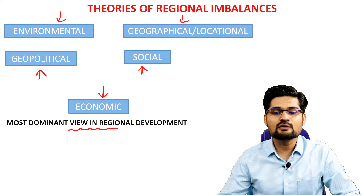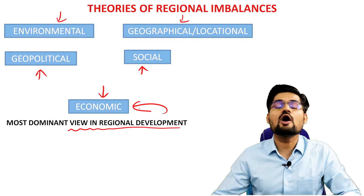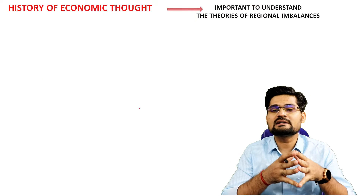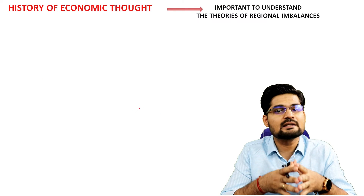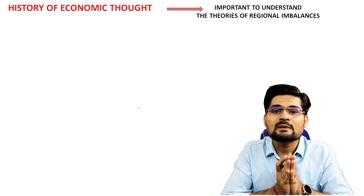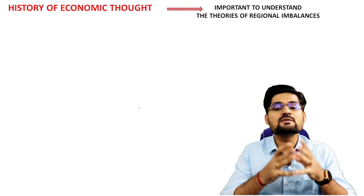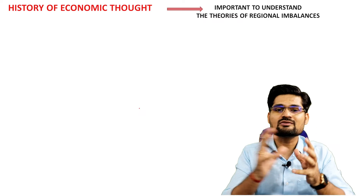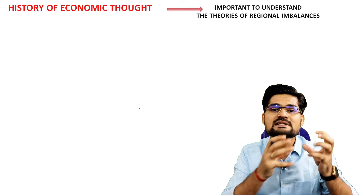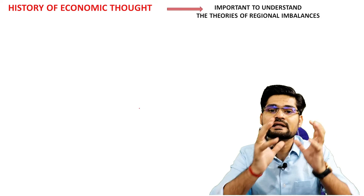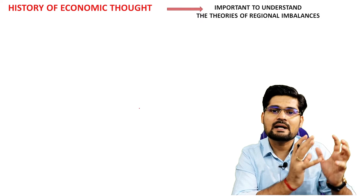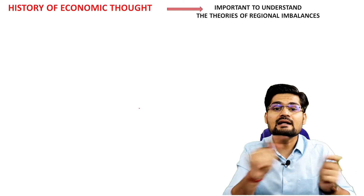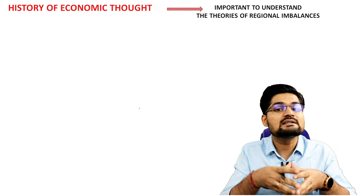The most dominant view in regional development is always the economic view. To understand these theories, we also need to consider the history of economic thought, which is very important for understanding theories of regional imbalances — how through history the economic thought process changed, various scholars gave different kinds of thought, and there was a paradigm shift in economic thinking over time that also led to changes in geographical thinking.